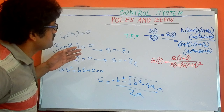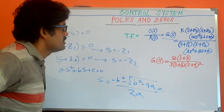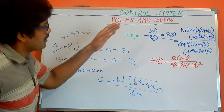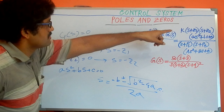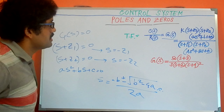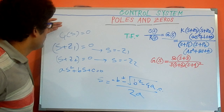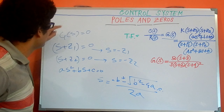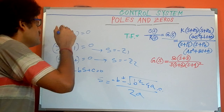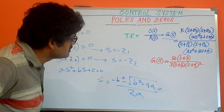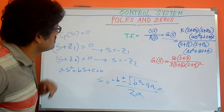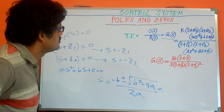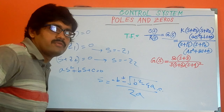So what are zeros? Zeros means for any transfer function, if you take the numerator as zero — or equivalently, if G(s) = 0 — that gives us the zero points or zero solutions in our transfer function analysis.